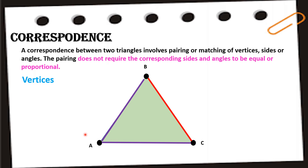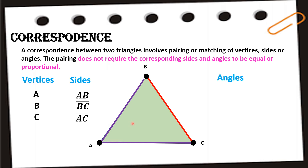For this particular figure, we have three vertices: point A, point B, and point C. For the sides, we also have three: line segment AB, line segment BC, and line segment AC. For the angles, we also have three. There are two ways to write angles — using one letter or three letters.